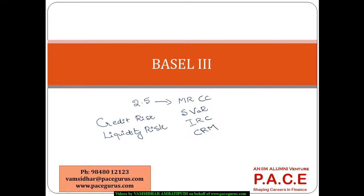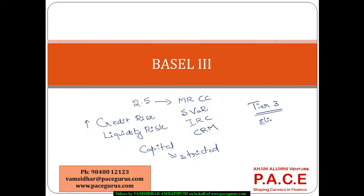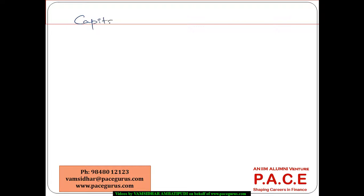The credit risk-based capital charge has actually gone up, and even the definition of capital has been very much tightened. The Tier 3 capital that was there as a part of Basel 1 and Basel 2 has been eliminated. So if I look at the clear-cut definition of capital now, there are only Tier 1 and Tier 2 capitals.